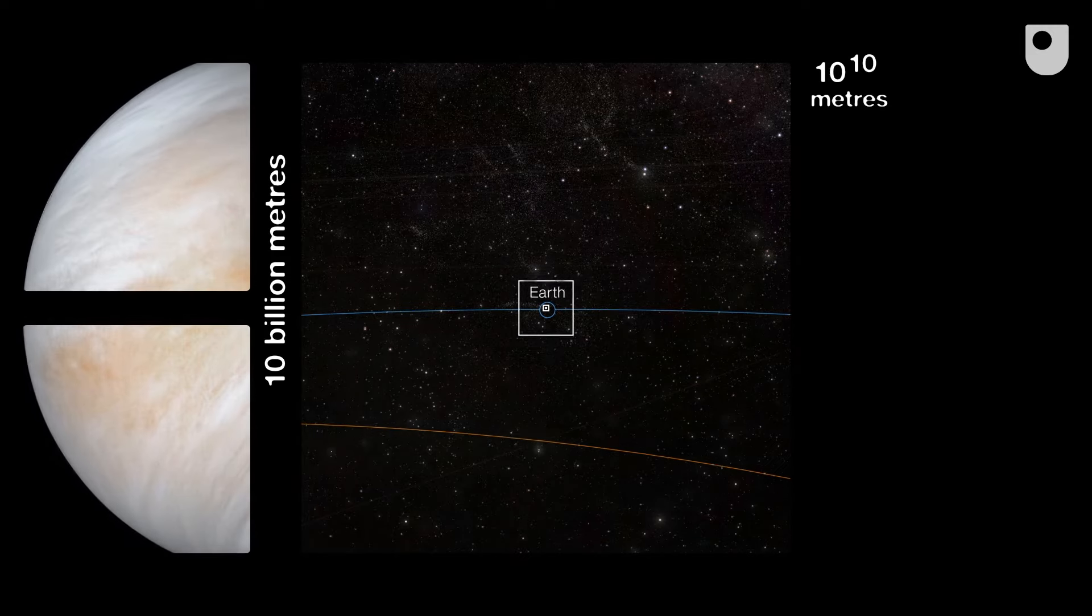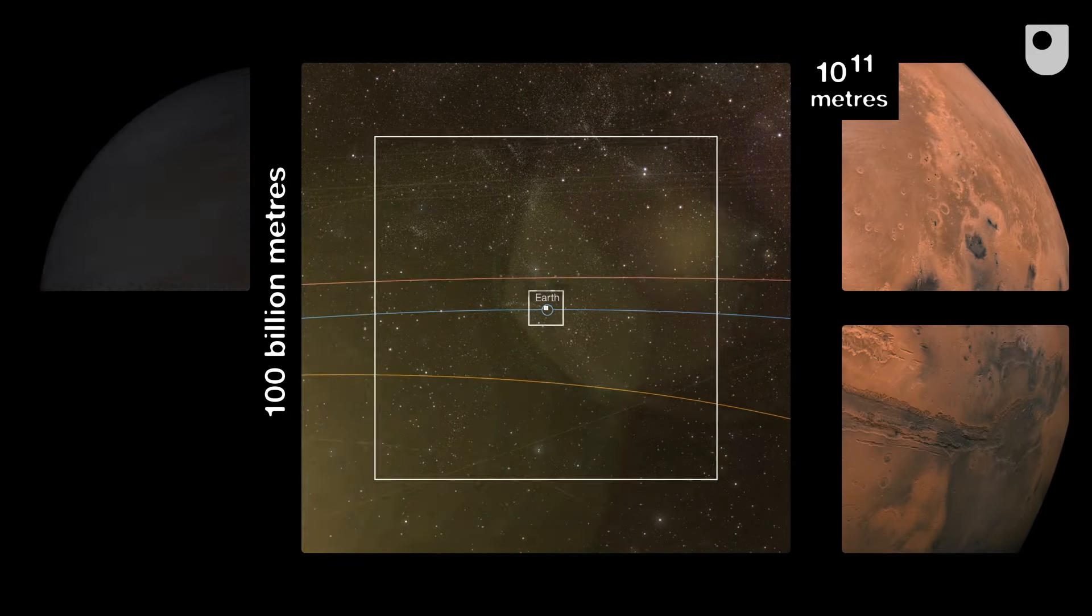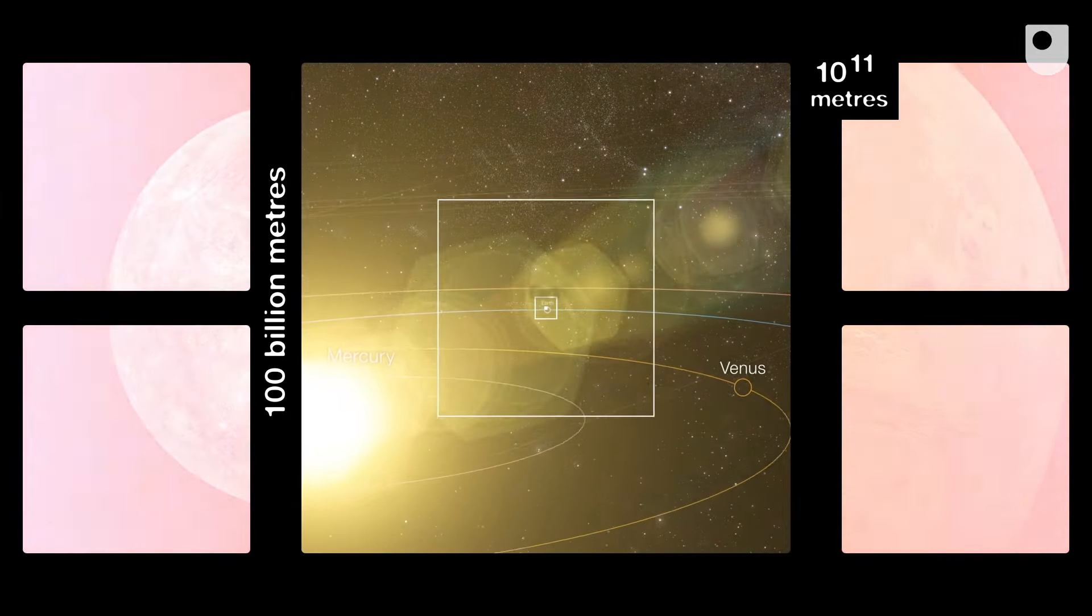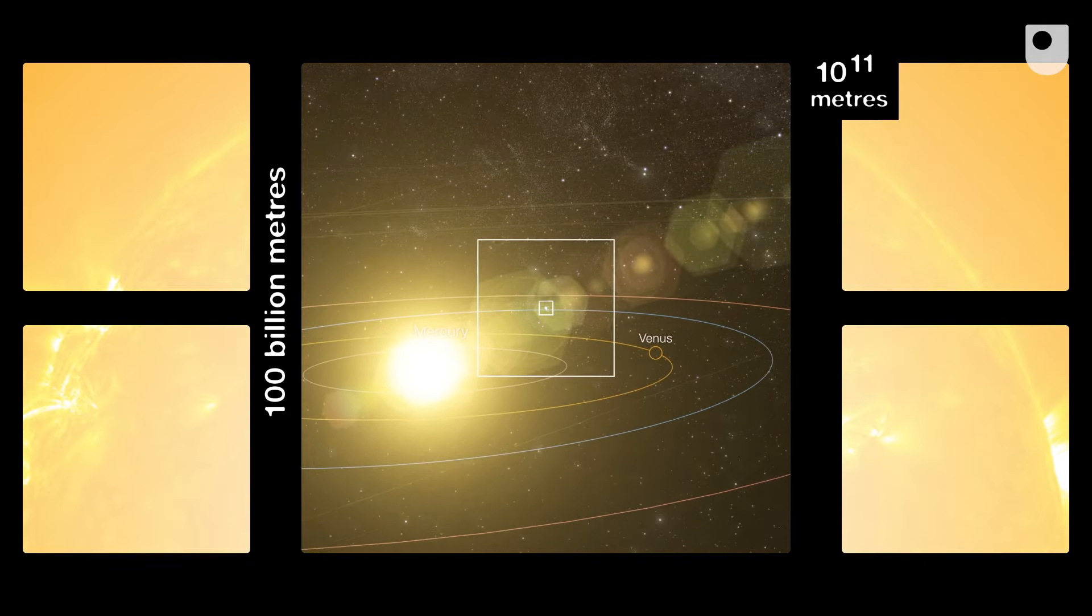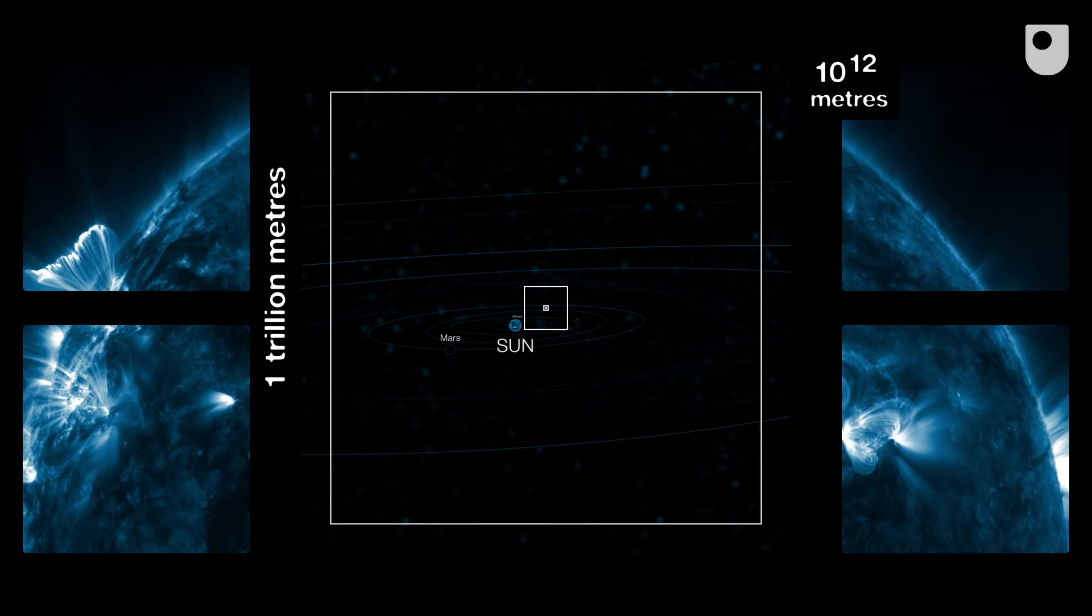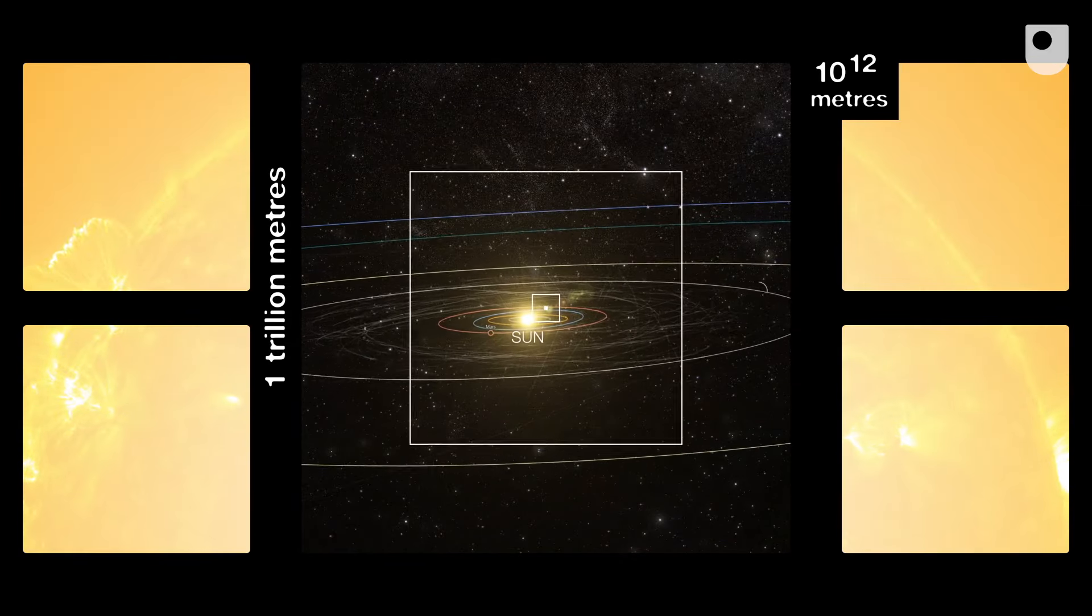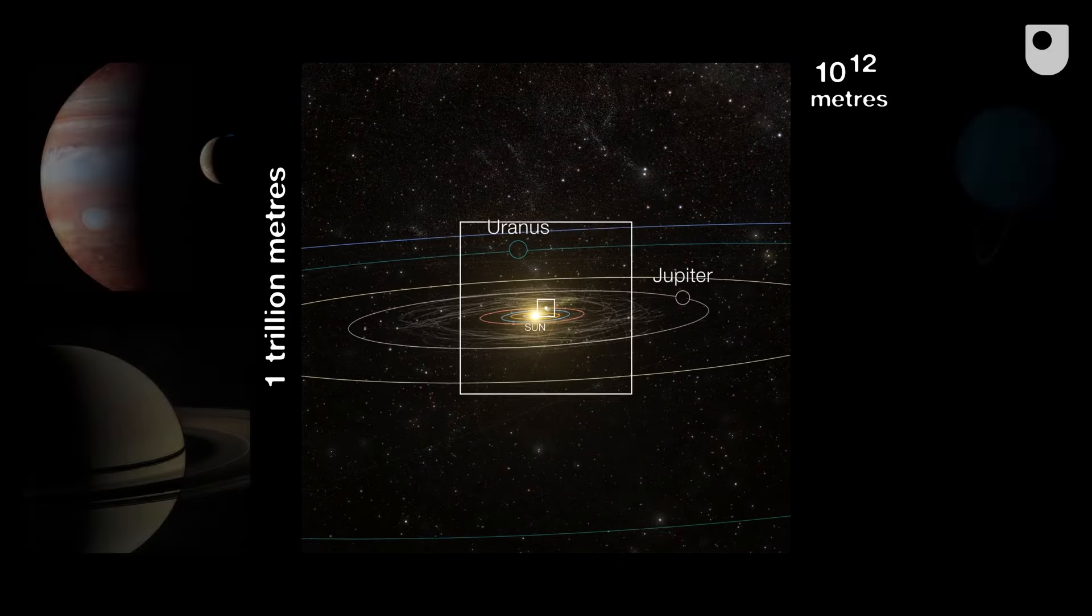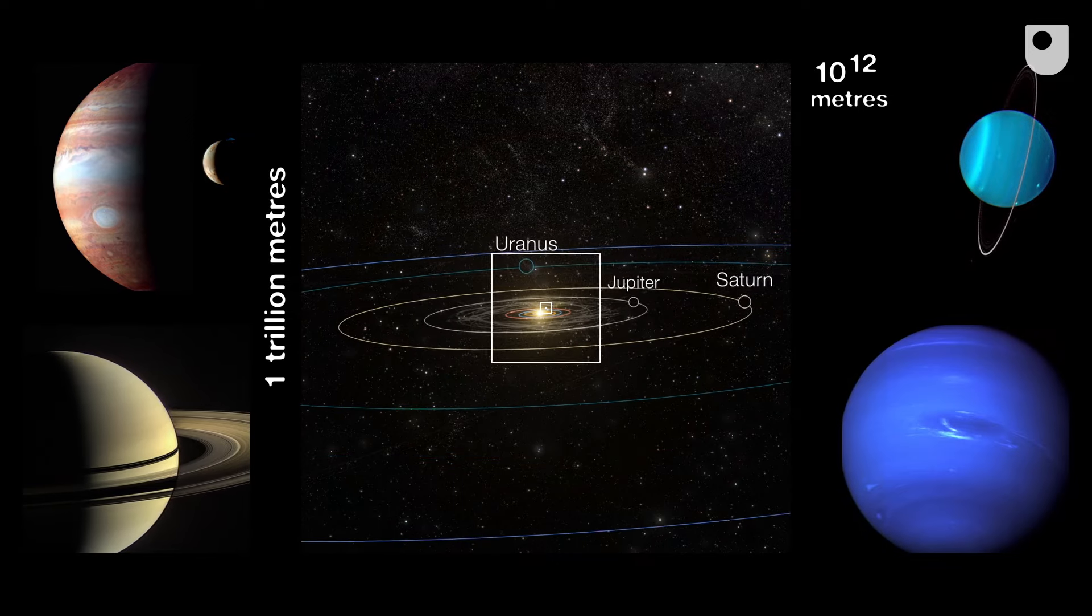Here comes the orbit of Venus, then Mars, and now Mercury. Since 2010, the NASA Solar Dynamics Observatory has been using an extreme ultraviolet filter to monitor the activity of our Sun. Finally, we reach the orbit of the outer planets, the gas giants, but just specks at this distance.